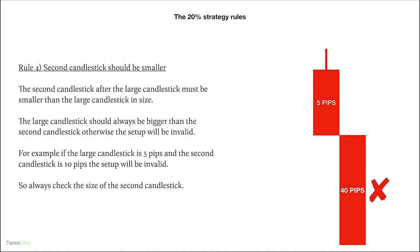Rule number four: the second candlestick should be smaller. The second candlestick after the large candlestick must be smaller than the large candlestick in size. The large candlestick should always be bigger than the second candlestick, otherwise the setup is invalid. For example, if the large candlestick is 5 pips and the second candlestick is 10 pips, the setup will be invalid. In the example shown, the second candlestick opened below but was bigger than the first — that makes it invalid.